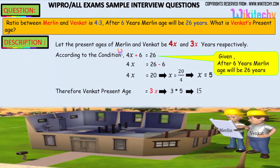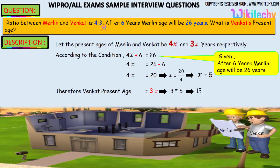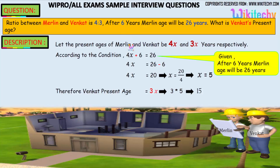Let the present age of Merlin and Venkat be 4x and 3x years respectively — Merlin is 4x and Venkat is 3x. After 6 years, Merlin's age: 4x plus 6 is equal to 26.